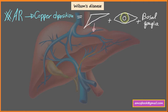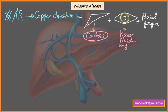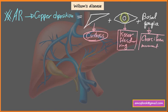Copper deposition in the cornea leads to Kayser-Fleischer rings, and deposition in the basal ganglia leads to choreiform movement — that is, a movement disorder. So if a case describes an inherited disease with liver cirrhosis, an eye problem such as Kayser-Fleischer rings, along with a movement disorder...